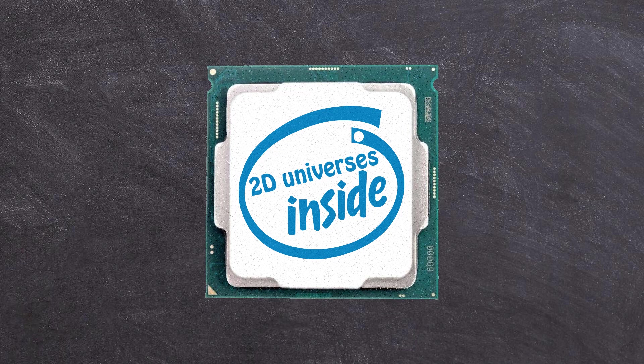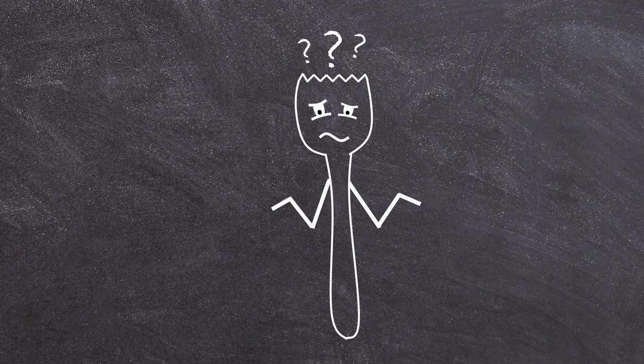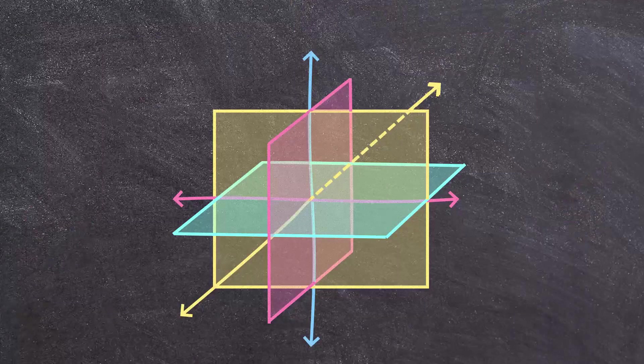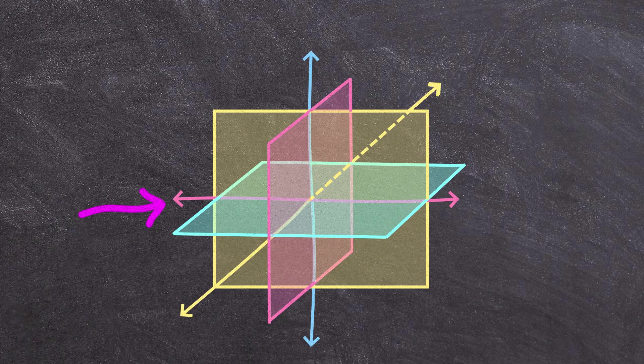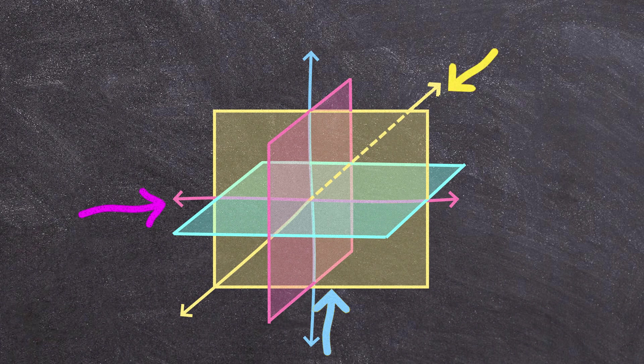Now at first glance this might seem like a bonkers idea. I mean we clearly live in a three-dimensional universe. You can move in the x direction, you can move in the y direction, and you can move in the z direction. Three dimensions.